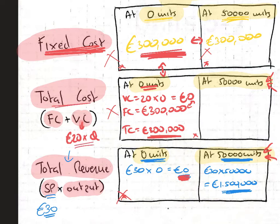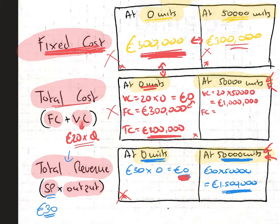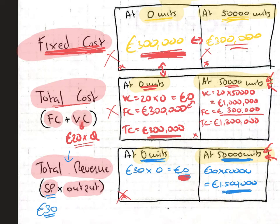Total cost at forecast output: variable cost is €20 per unit × 50,000 units = €1,000,000 in variable costs. Fixed costs remain at €300,000. Total cost = €1,000,000 + €300,000 = €1,300,000 at 50,000 units. We now plot that point on the graph and connect it to our starting point of €300,000 at zero units — and we have our total cost line.